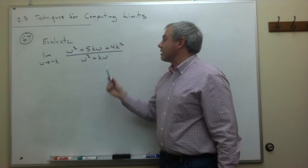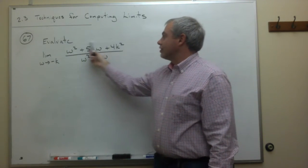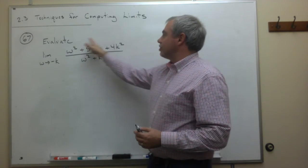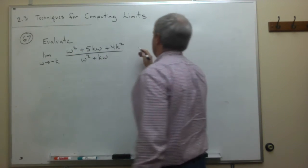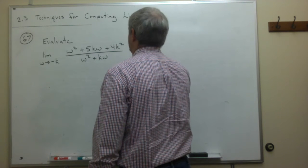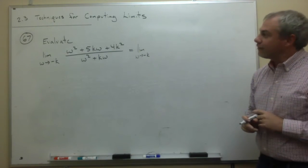So what I'm going to have to do is I'm going to have to factor this in some way. So I need to factor the top. What I see is if the top is going to factor, let's rewrite. This is the limit as w goes to negative k.